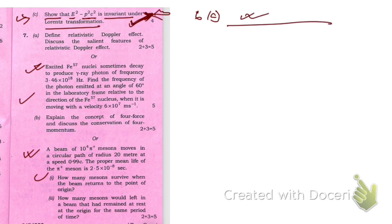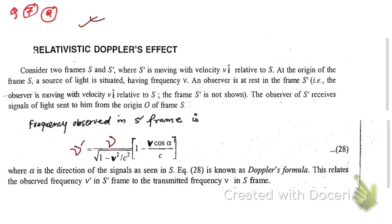Question 7a: Define relativistic Doppler effect and discuss the salient features. Here is the answer. If there are two frames S and S dash, where S dash is moving away from S, an observer at S dash receives a signal from a source at S. The frequency that the observer in motion will receive is given by this equation, which is the relativistic Doppler effect.